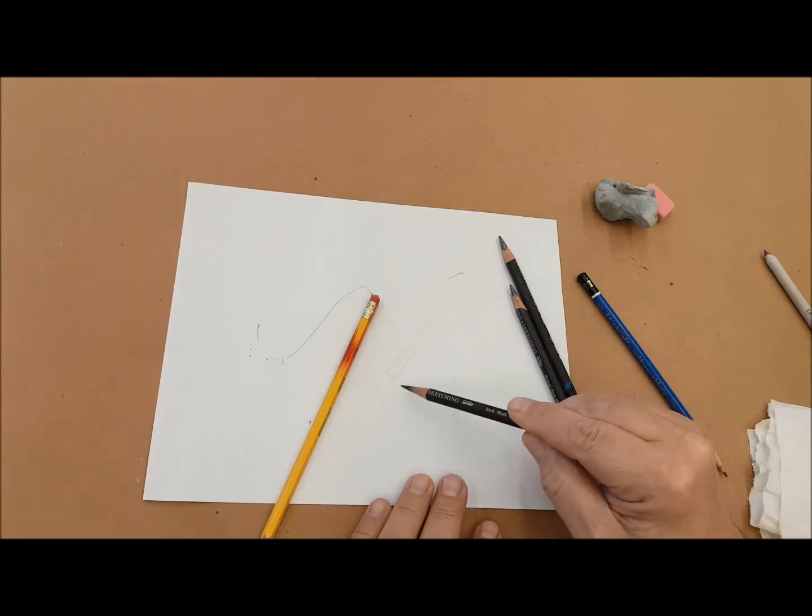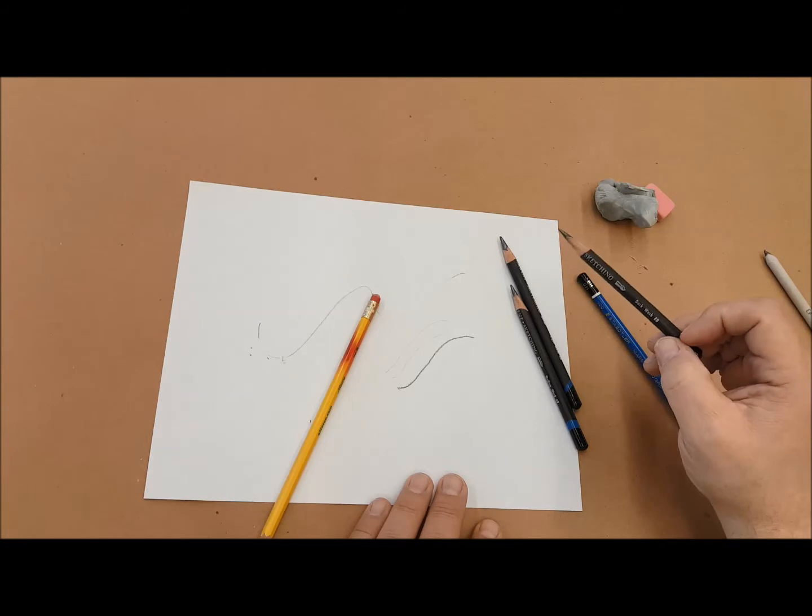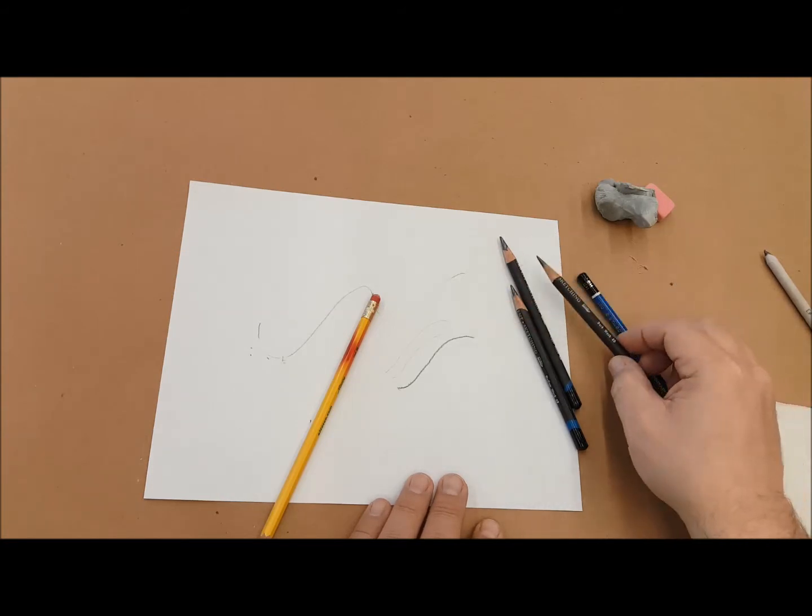B stands for soft. When I press with that, it makes a much darker, bolder line. These are really good for shading.